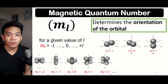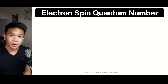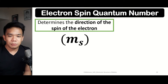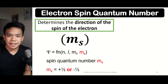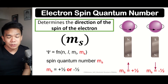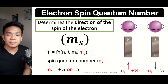That means there are five possible orientations for that specific orbital. Lastly, we have the electron spin quantum number, which determines the possible direction of the spin of the electron, represented by the symbol M sub S. It can be represented as either positive 1/2 or negative 1/2. If a specific electron is moving in a clockwise direction, the possible value of its electron spin quantum number is positive 1/2. On the other hand, if the electron is moving in a counterclockwise direction, the value is negative 1/2.